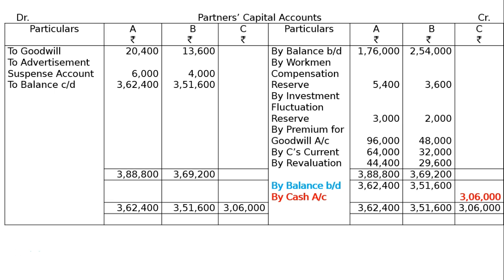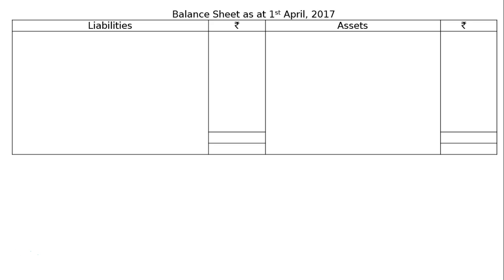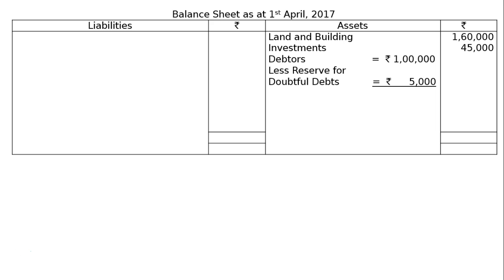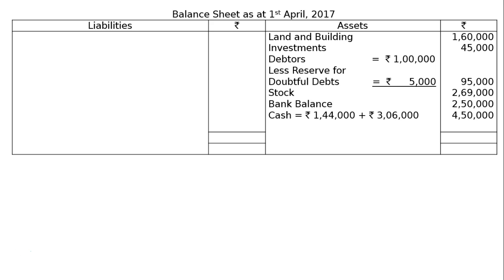Balance sheet as at 1st April 2017: Land and building revalued value Rs. 1,60,000; investment Rs. 45,000; debtors Rs. 1,00,000 less new provision for doubtful debts Rs. 5,000 equals Rs. 95,000; stock Rs. 2,69,000; bank balance Rs. 2,50,000; cash Rs. 1,44,000 for goodwill premium and capital contribution by C; Rs. 3,06,000; both together Rs. 4,50,000; C's current account Rs. 96,000; total Rs. 13,65,000.